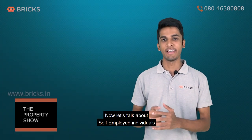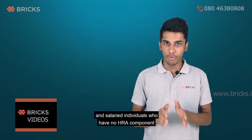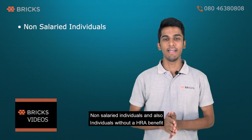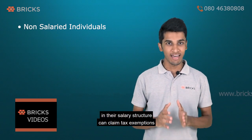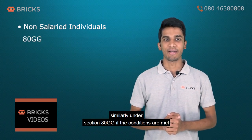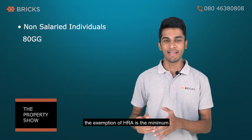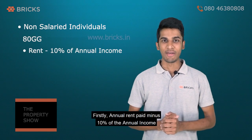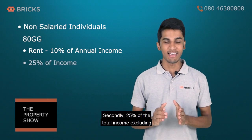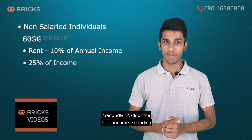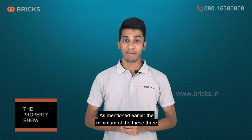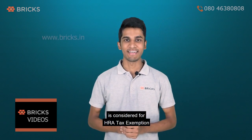Now let's talk about self-employed individuals and salaried individuals who have no HRA component in their salary structure. Such individuals can claim tax exemptions under Section 80GG if the conditions are met. Under Section 80GG, the exemption is the minimum of: firstly, annual rent paid minus 10% of annual income (excluding capital gains); secondly, 25% of total income (excluding capital gains); and finally, ₹5,000 per month, which is fixed. The minimum of the three is considered for HRA tax exemption.